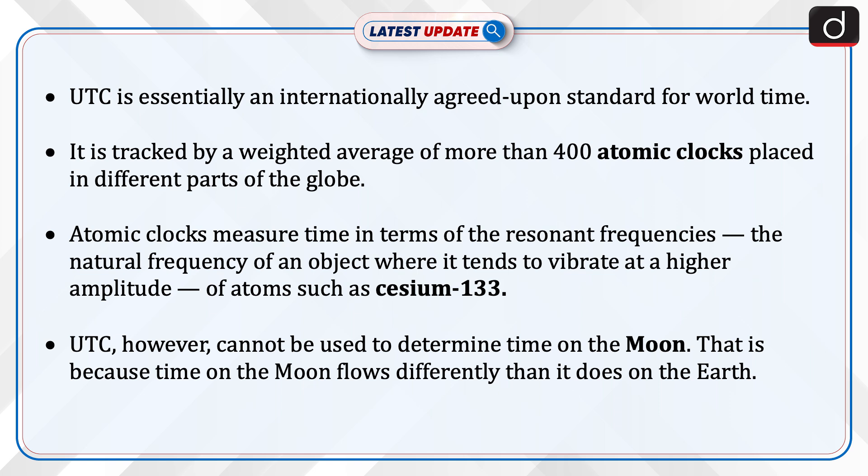Atomic clocks measure time in terms of the resonant frequencies — the natural frequency of an object where it tends to vibrate at a higher amplitude — of atoms such as Caesium-133. UTC, however, cannot be used to determine time on the Moon.